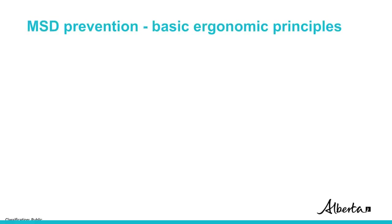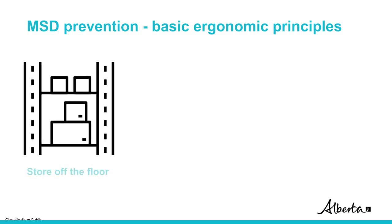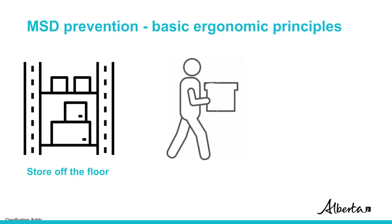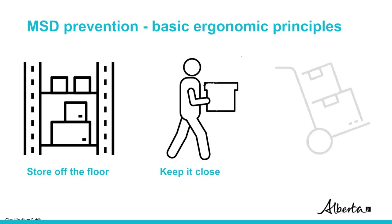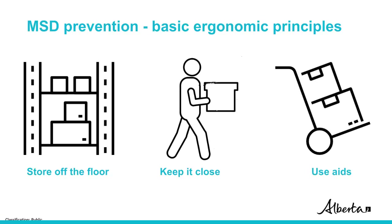Basic ergonomic principles can also be considered when starting an MSD prevention program in an industrial or field environment. For example, store it off the floor — store and work on objects between hip and chest height. Keep it close — handle objects or perform work close to the belly button compared to reaching away from the body to get better mechanical leverage, and use a larger body part such as an arm versus a finger to distribute forces. Use aids — use mechanical aids when lifting or handling devices like vices or grips when performing gripping tasks. Make sure aids are in good working order.